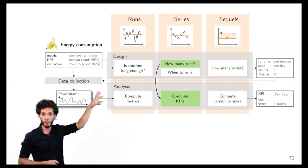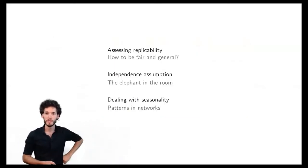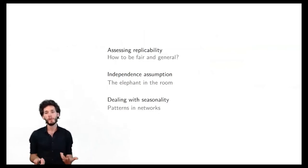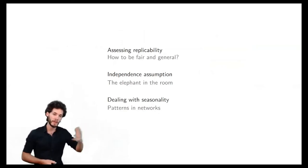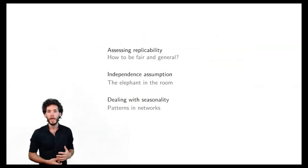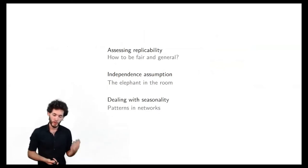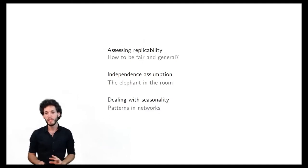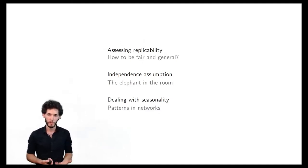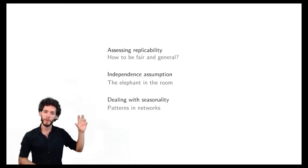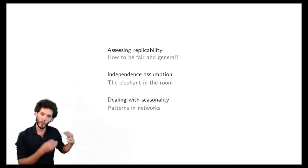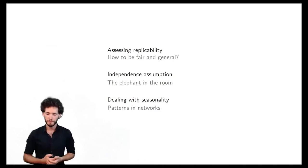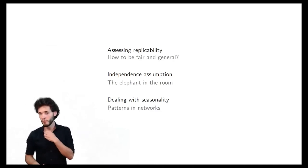Now, in the second part, I'll briefly talk about how we assess replicability — which is what we started with: the Banana example and the question of whether it would be replicable. Then we'll talk about independence — this is really the elephant in the room — and finally about something slightly more specific to networks: what is called seasonality, the fact that we have periodic patterns in our environment. I'll explain why that matters and what we can do about it.